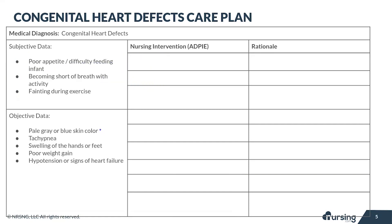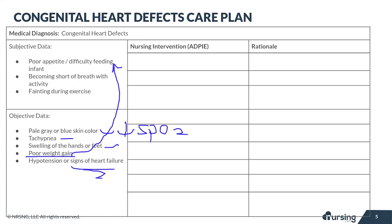Objective data you may see with congenital heart defects include pale or blue skin, which is related to decreased oxygen saturation. You may also see tachypnea, edema — so swelling in the hands and feet — and poor weight gain in infants who have difficulty feeding. If the defect has gone undetected and untreated, you might also see signs of heart failure.